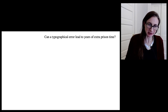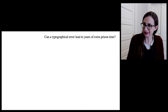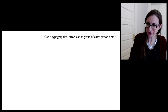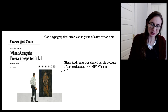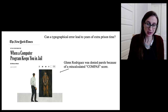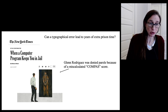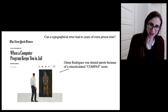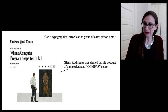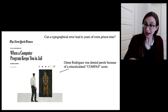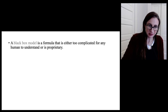I want to start with the question of whether a typographical error can lead to years of extra prison time. This should never happen — typos making decisions. Who's making decisions, a judge or a typo? It happens all the time. This is an article about a person named Glenn Rodriguez who was denied parole because of a miscalculated COMPASS score. COMPASS is a proprietary black box model that's used widely throughout the justice system, and yes, a typo made a decision here, not a parole board. You might think this is a one-off, but that's not true. We've been looking at criminal justice databases and it happens all the time. Not only that, this kind of thing happens in loan decisions, medical decisions, and lots of other high stakes decisions. And it's really difficult to figure out when it happens if the model making the predictions is a black box predictive model.